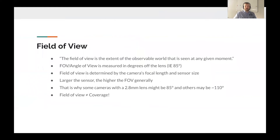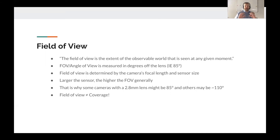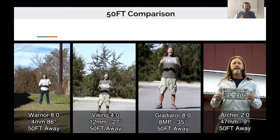So what is field of view? Field of view is the extent of the observable world seen at any given moment — basically what's measured off the camera, in degrees. For example, 85 degrees means it's 85 degrees off the lens. Field of view is determined by two things: the lens focal length, and also sensor size. Generally, the larger the sensor, the higher the field of view. That's why a 2.8mm lens might be 85 degrees on one camera and 110 degrees on another — the one with 110 degrees simply has a larger sensor.